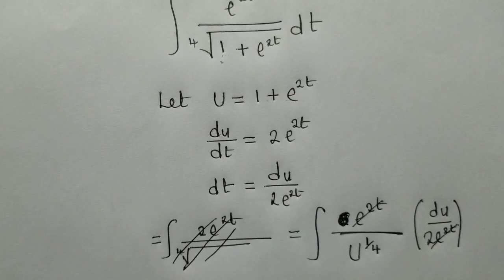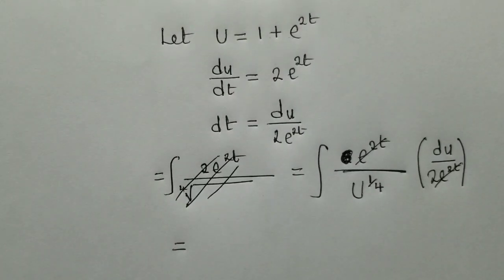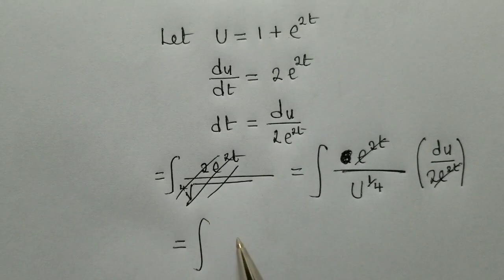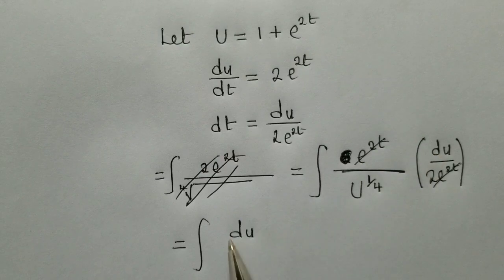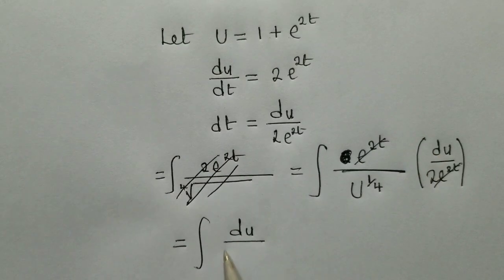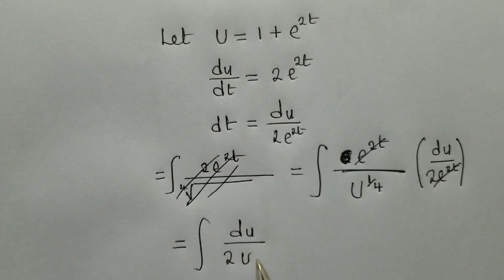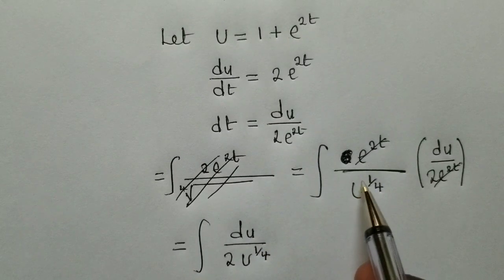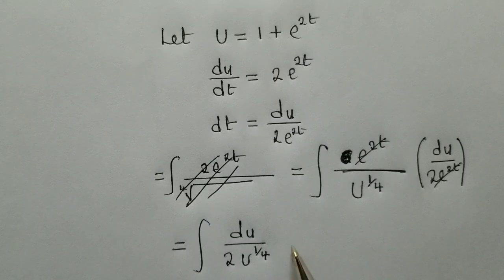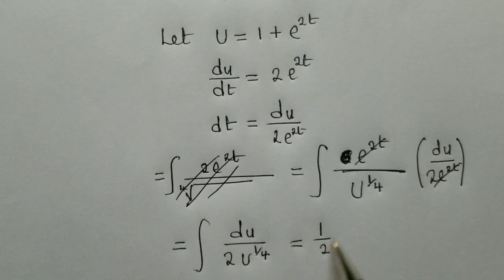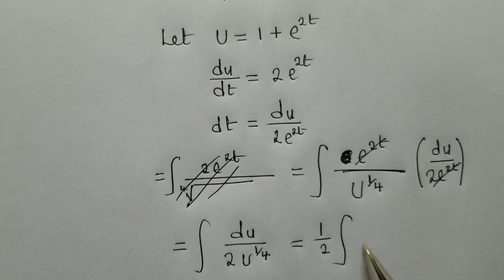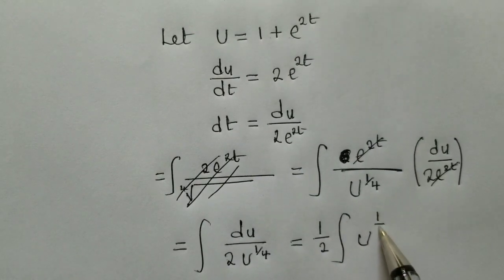So we say equal to the integral of du, because we have du here over 2t over u power 1 over 4. When we multiply this, so the next thing here will just be to integrate this. So it will be 1 over 2. These two here will come outside.